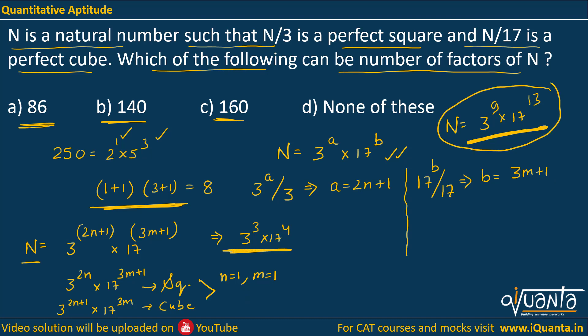So we must arrange something so that dividing by 3 still gives a perfect square and dividing by 17 gives a perfect cube — in this case the number of factors is 20. The key is to attach an additional prime p to the power 6k, since its power must be a multiple of both 2 and 3 (i.e., a multiple of 6) so that dividing by 3 or 17 does not disturb the perfect square or perfect cube property. The number of factors now becomes (2n+2)(3m+2)(6k+1).